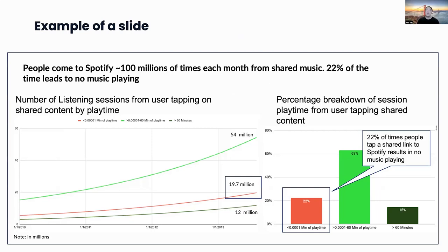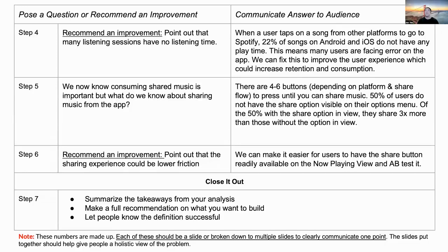Here's an example of a slide I would create. I highly recommend making very simple slides — just put in a point where someone can have a very simple takeaway. In this slide I put: this happens 100 million times every month, but 22% of the time when people come over to Spotify from a shared link, nothing happens — you don't get to listen to music. It's a pretty poor experience, and that's a lot of upset people. So we move on to making a recommendation: this is happening 22% of the time, and I think we should fix it because it will overall improve our metrics but also improve the user experience.